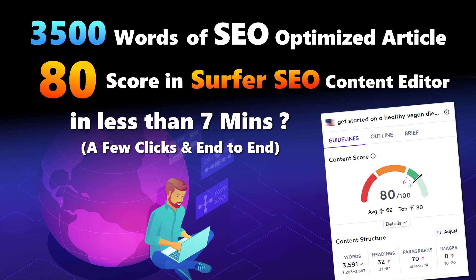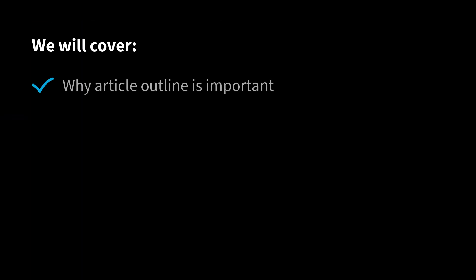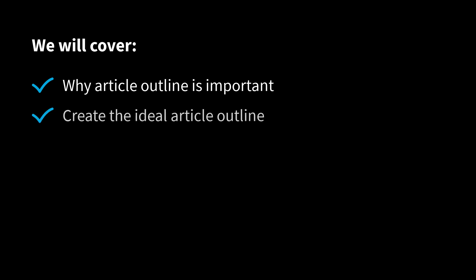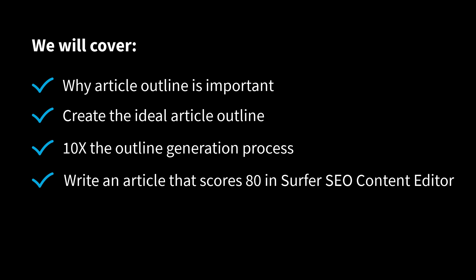You will get a step-by-step guide on how to write SEO-optimized articles that score 80 in Surfer SEO Content Editor, and it only takes a few minutes using the right AI writer. We will cover why article outline is important, how to create the ideal article outline, how you can 10x the outline generation process, and how you can write an article that scores 80 in Surfer SEO Content Editor within a few minutes.